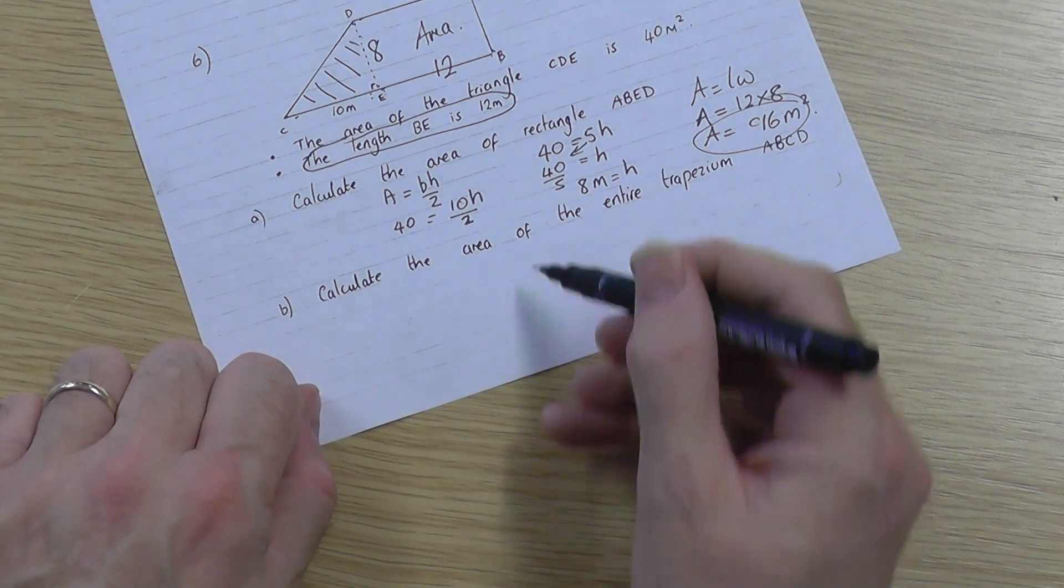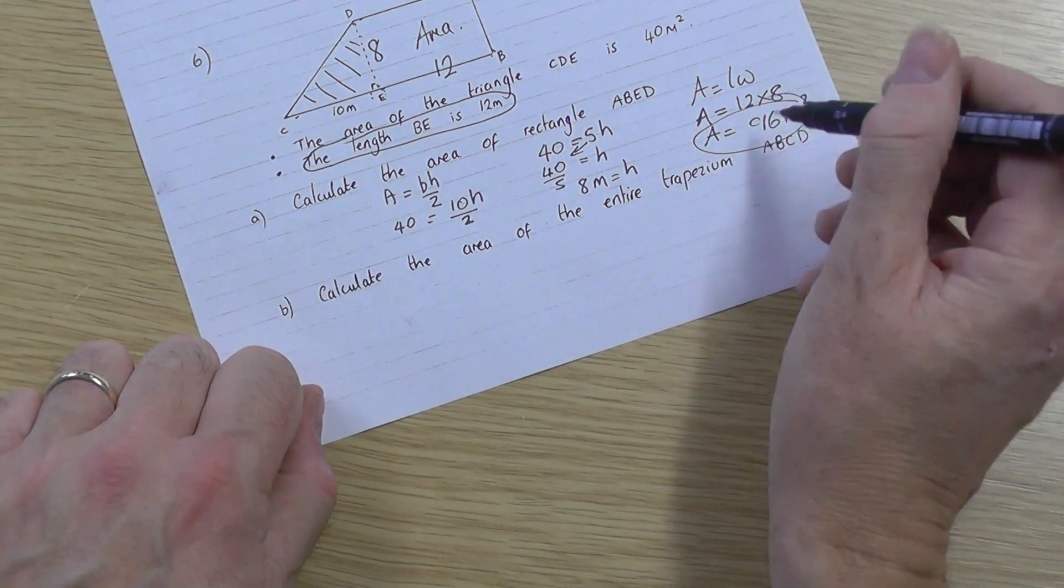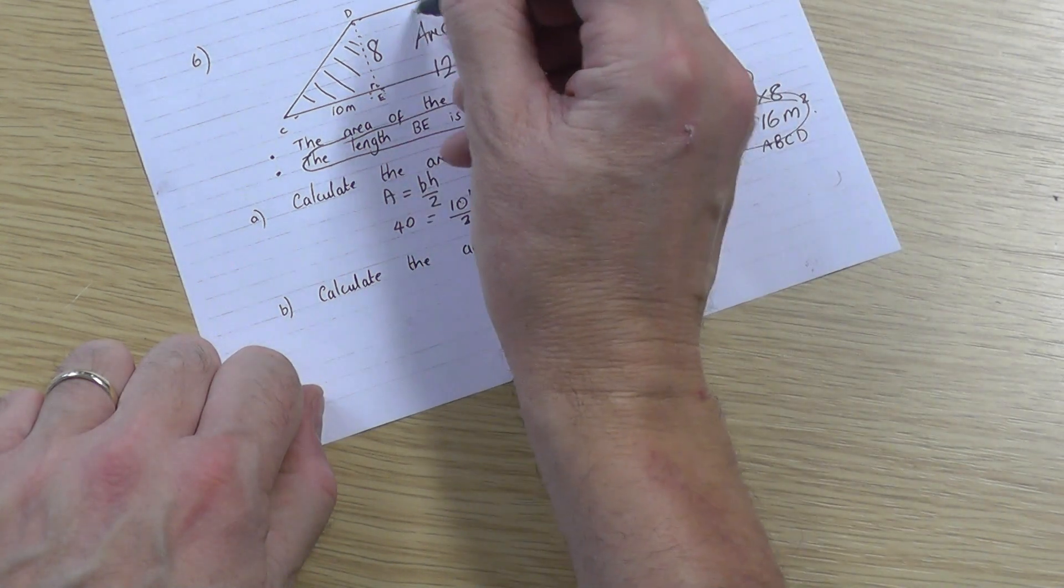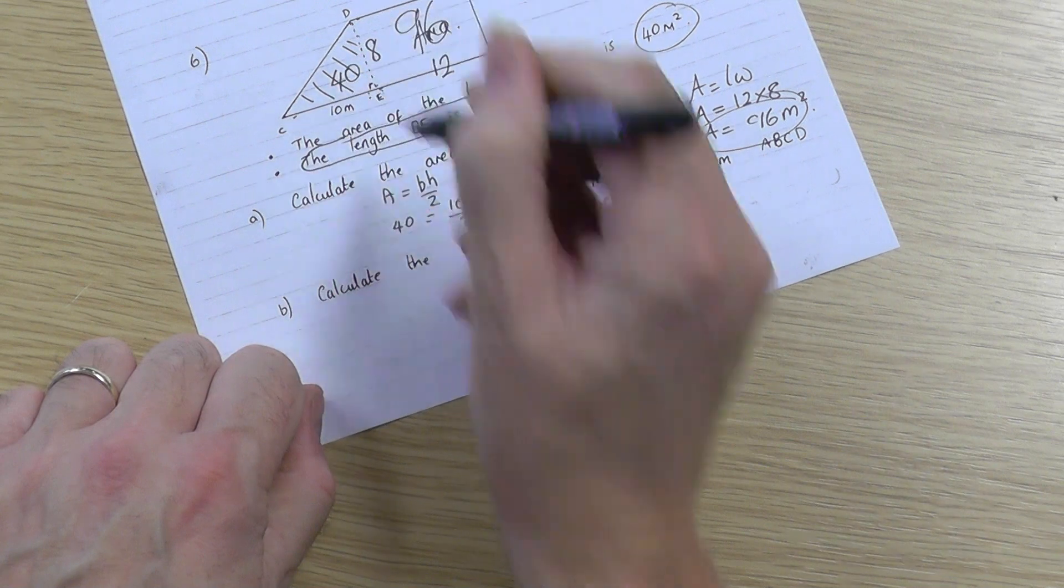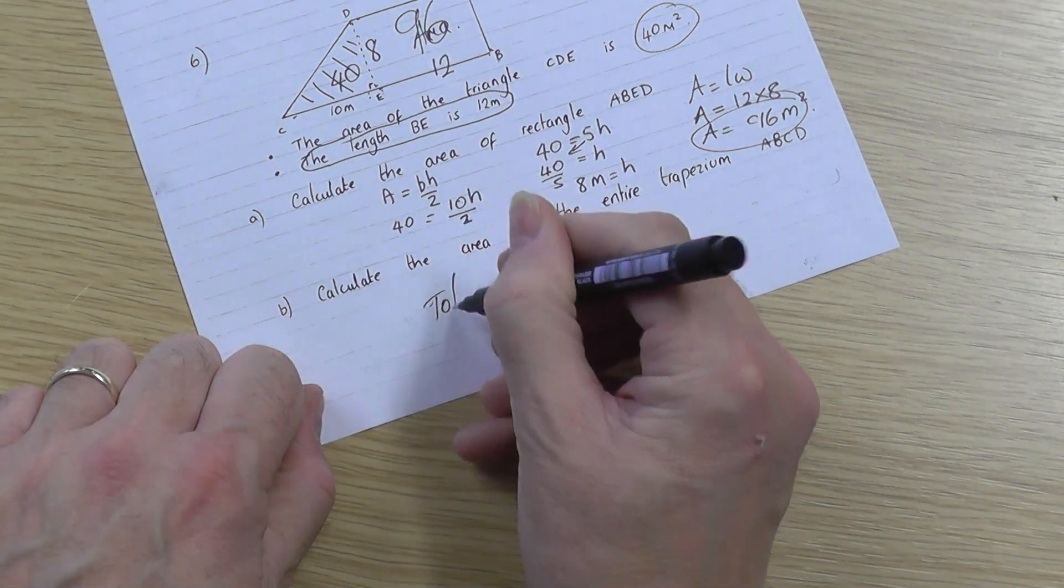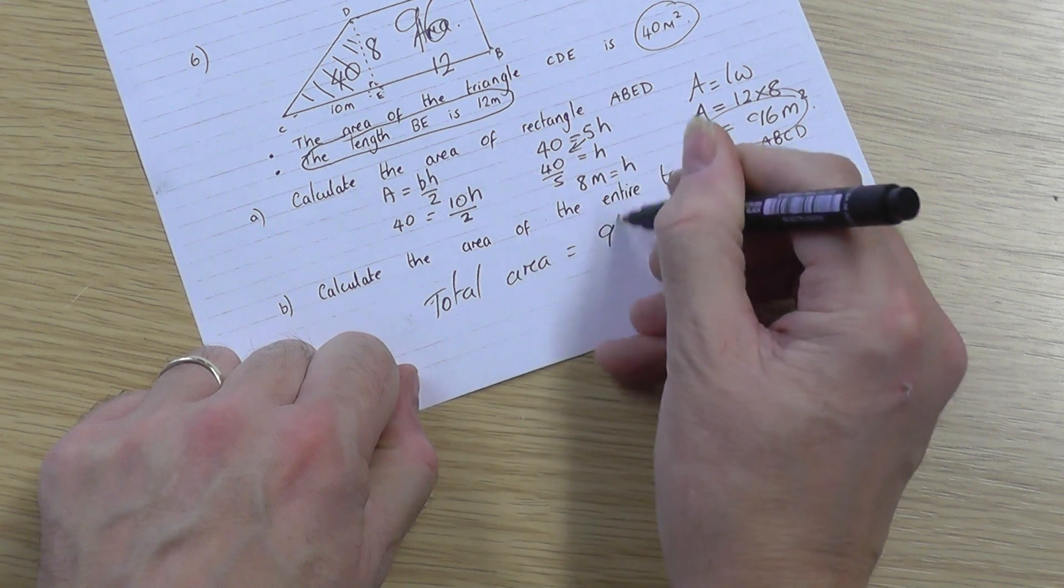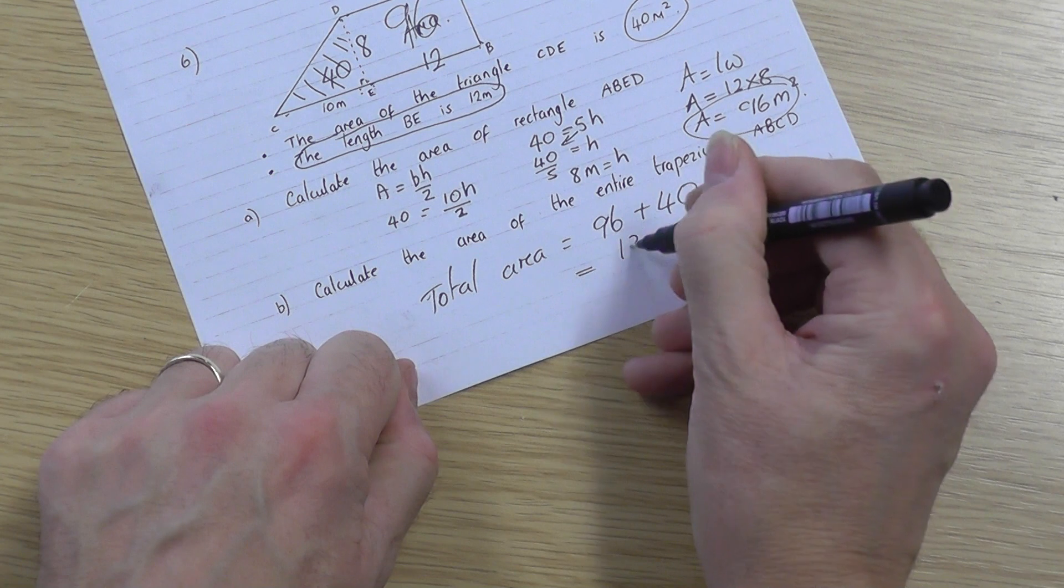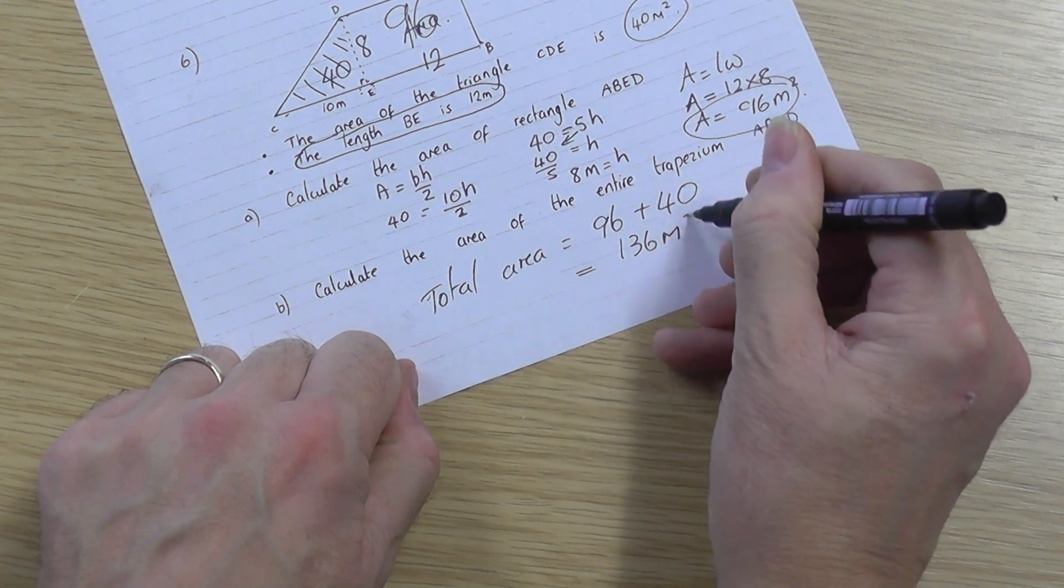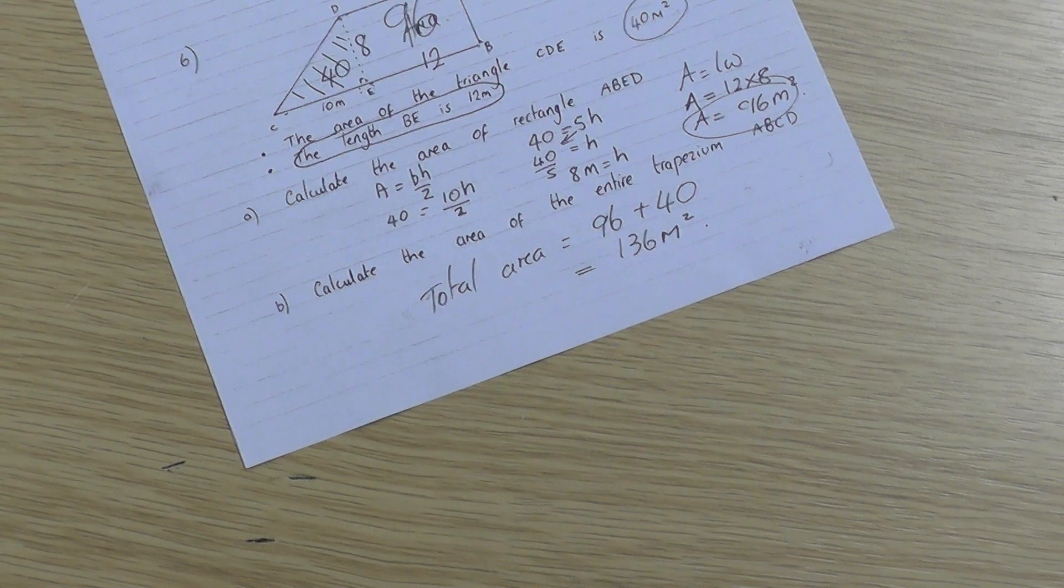Now, finally, calculate the area of the entire trapezium. Well, you know that the area of the rectangle is now 96. You already know the area of the triangle is 40. So the total area, the last part, will be 96 for the rectangle plus 40 for the triangle. You get 136 metre squares is the area of the entire trapezium. And that's the end of this question.